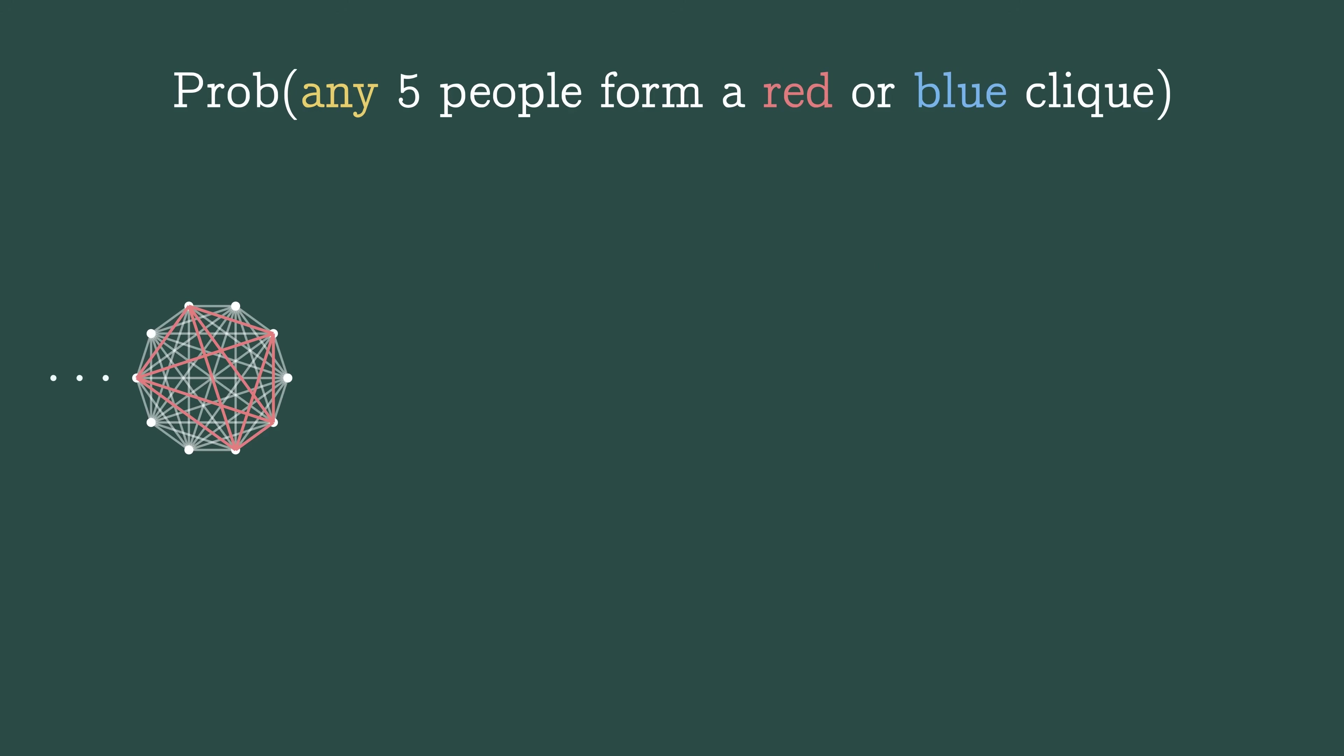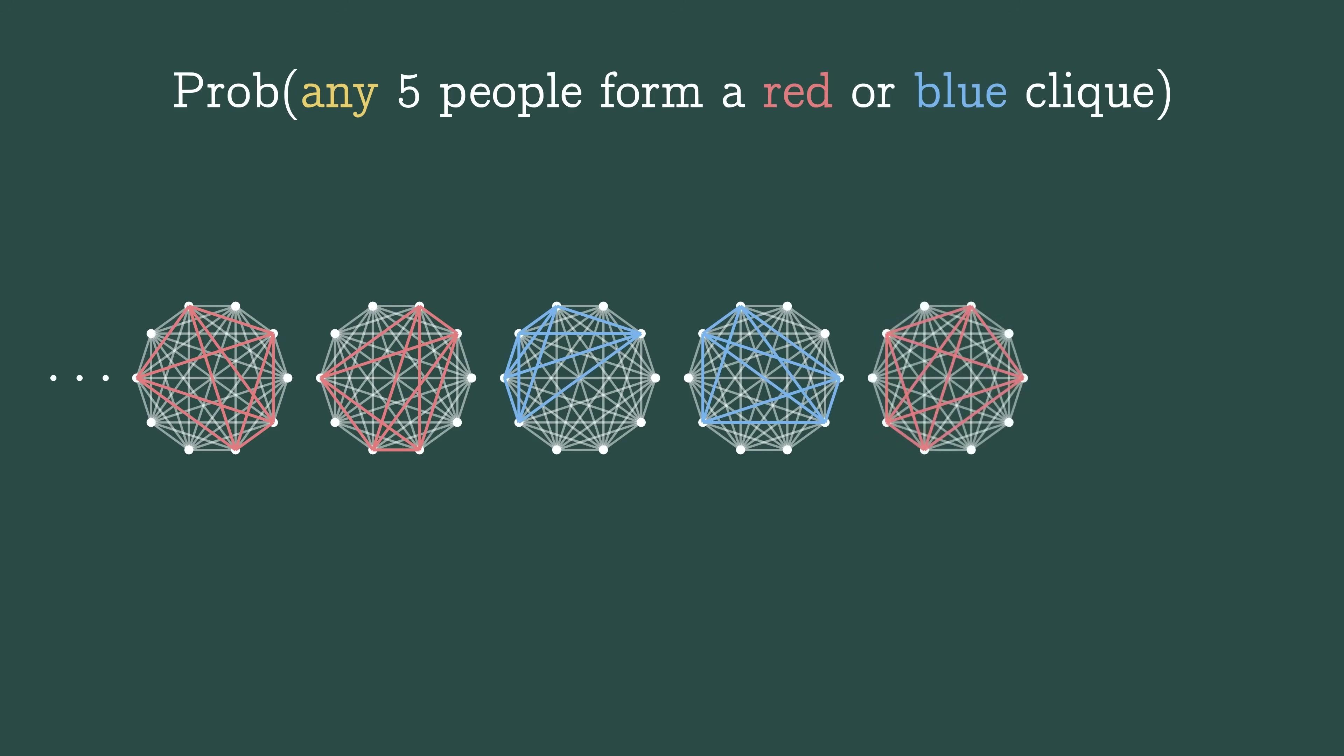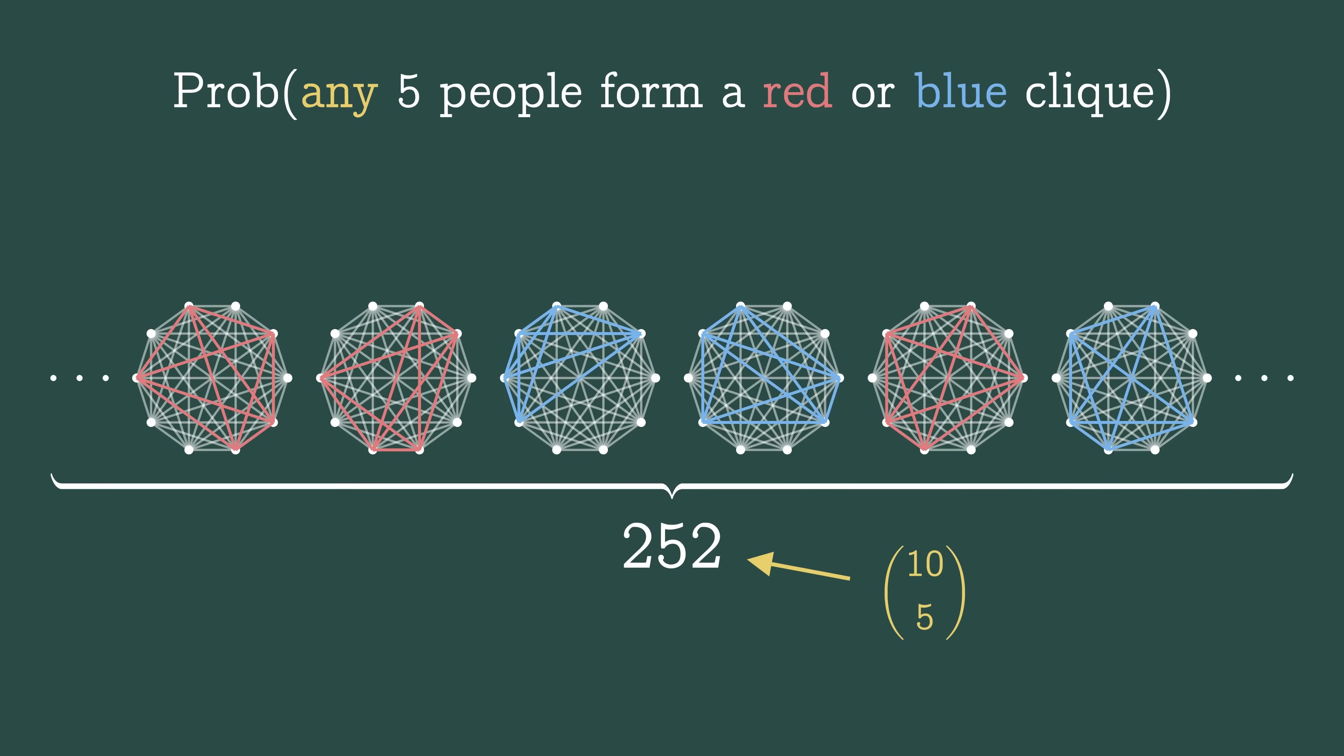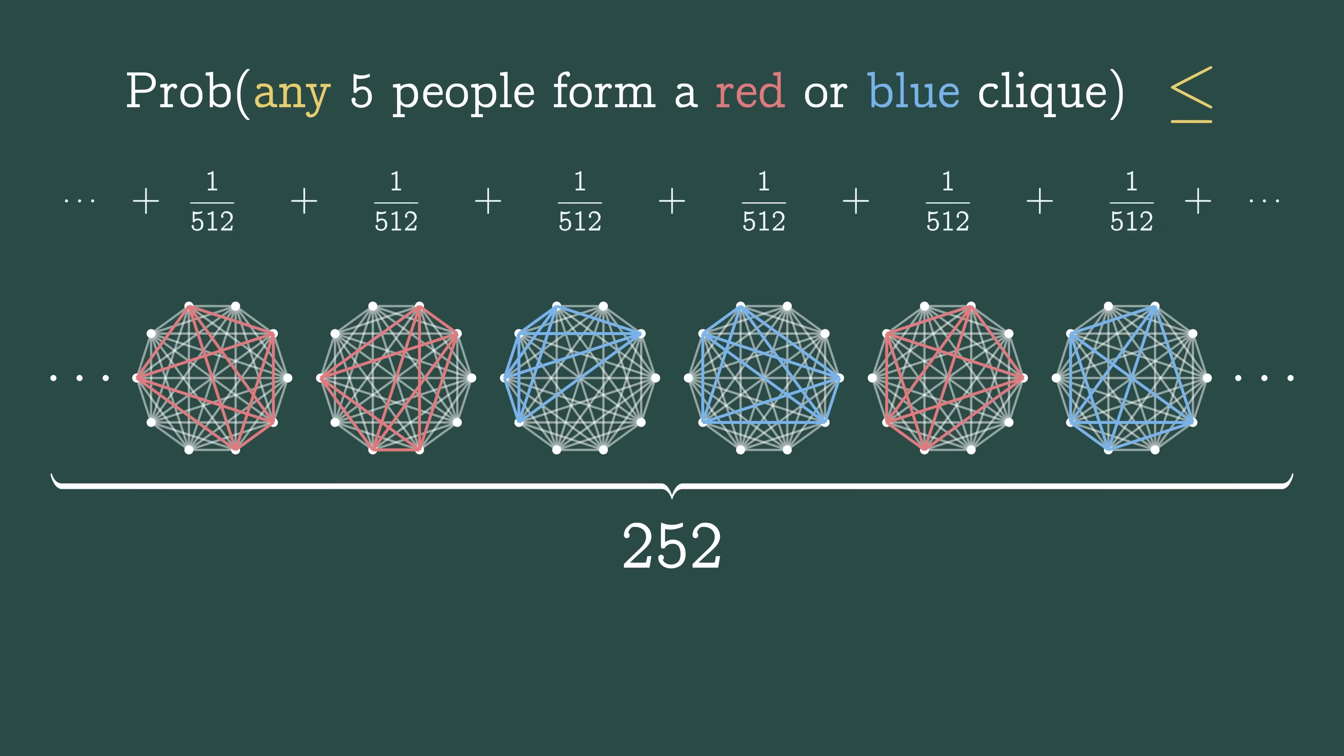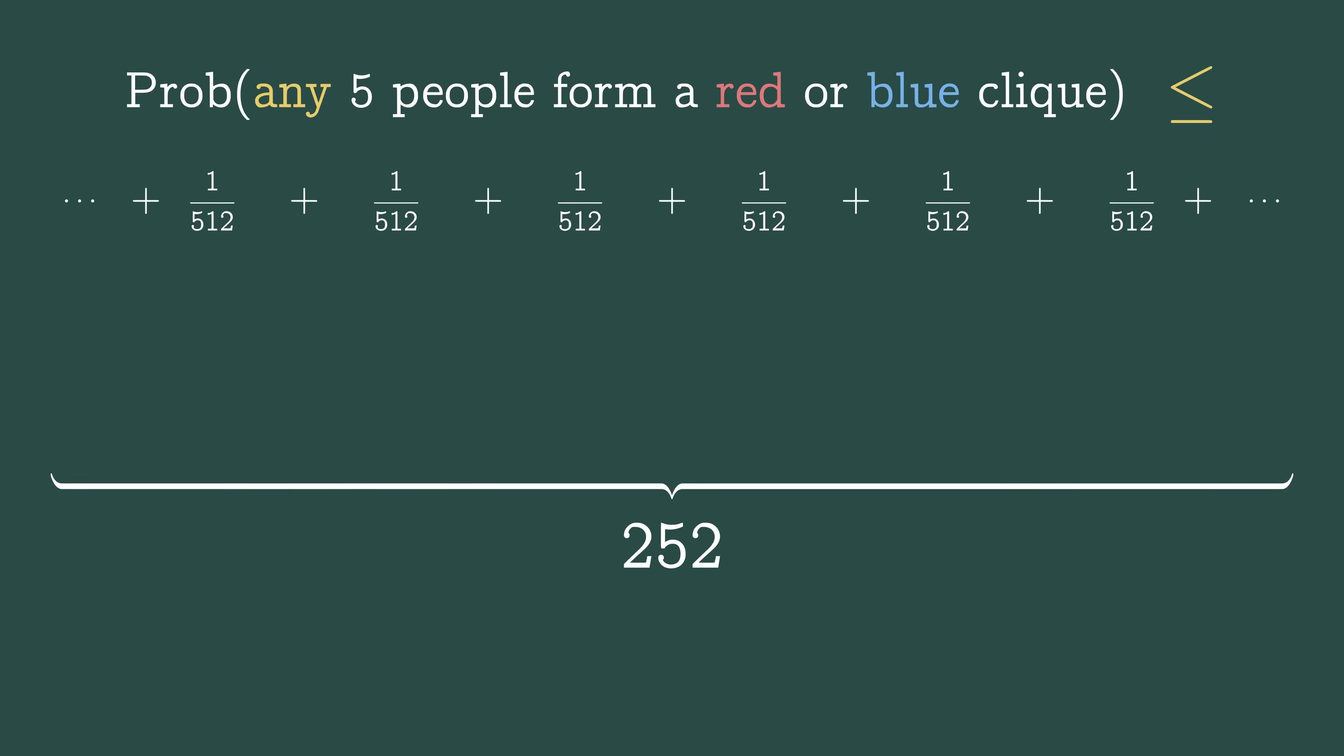Well, it could be these five people or these or these and so on. There are 252 possible groups. That's 10 choose five. The number of ways to choose five things from a collection of 10 things. The probability that it's here or here or here is less than or equal to the sum of those individual probabilities, the probability that you find it in that exact location. In other words,